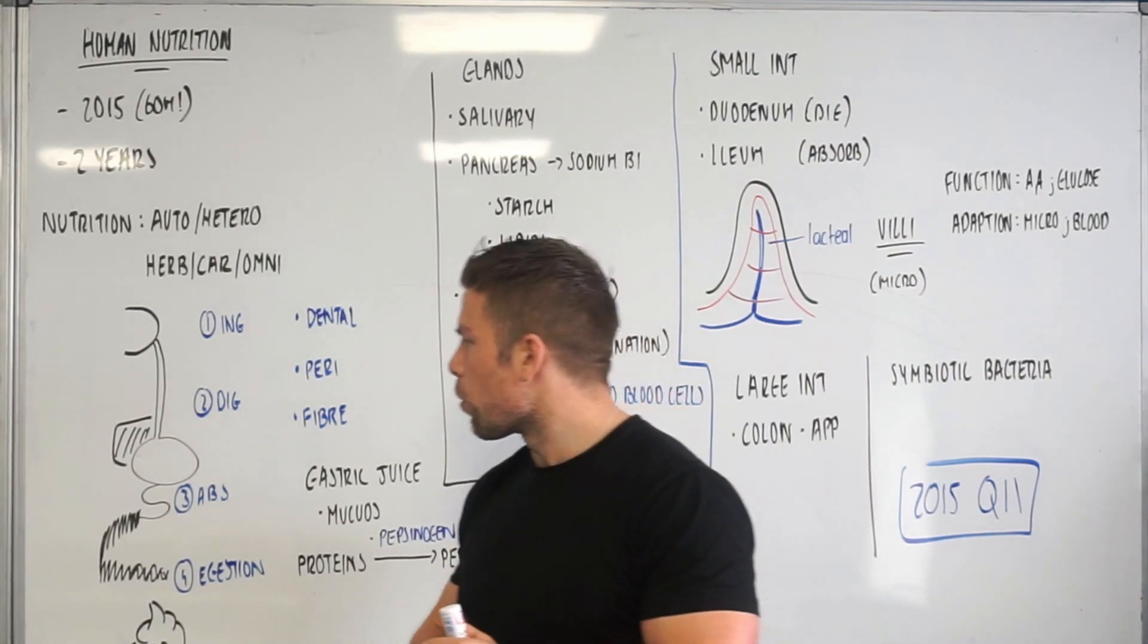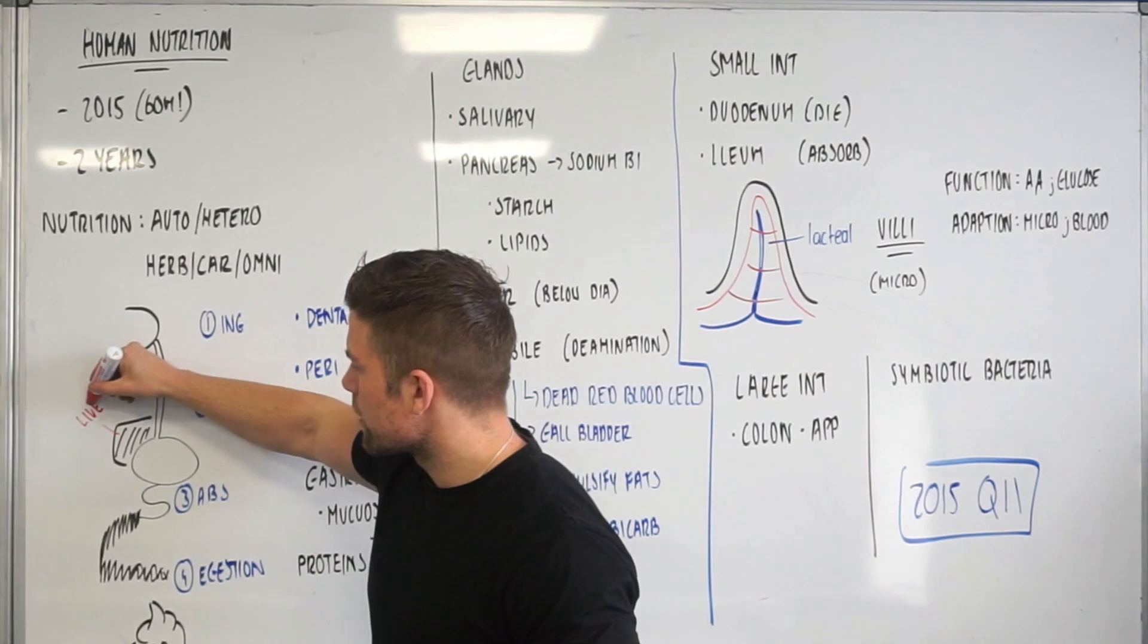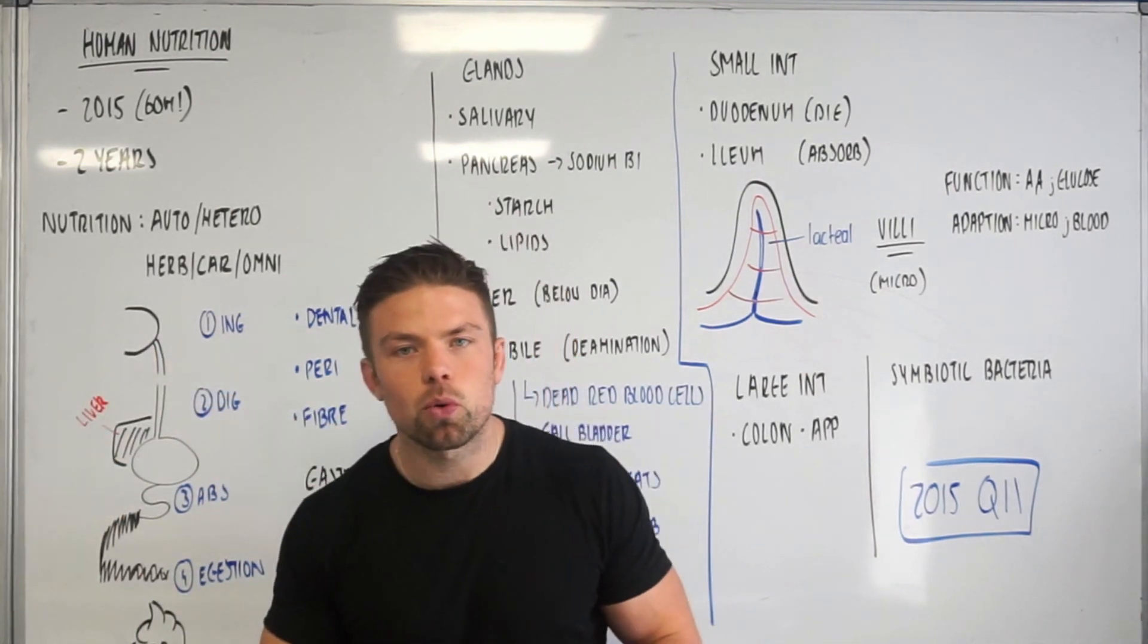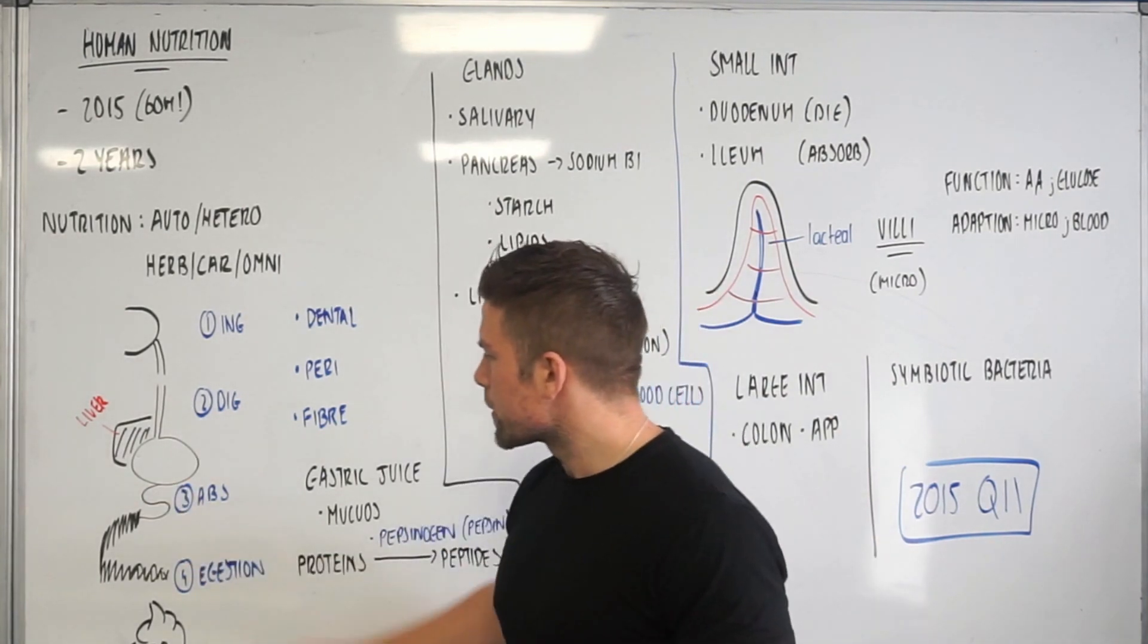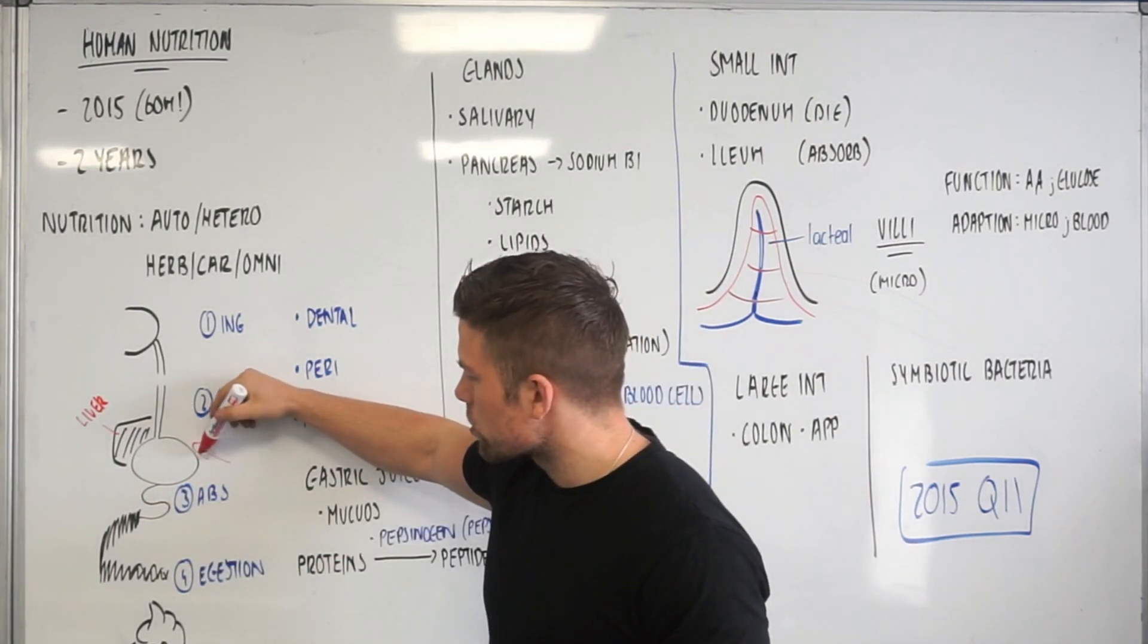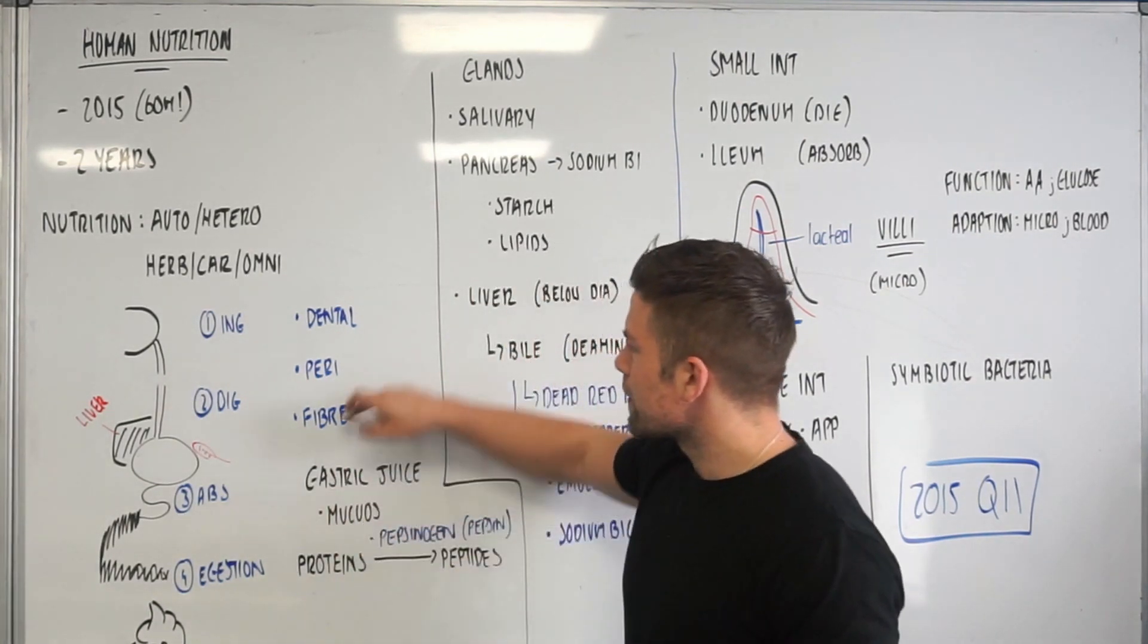I've drawn over here just on the diagram randomly the liver, because the liver is massively important for us and quite frequently the examiner asks you to pick that out. And then also potentially we might have to draw the pancreas which kind of just looks like a leaf in and around the place.